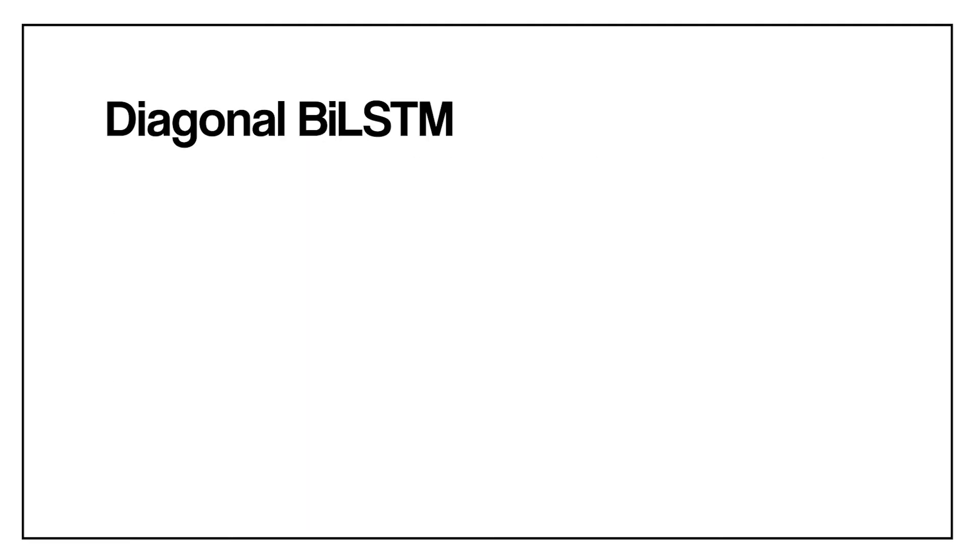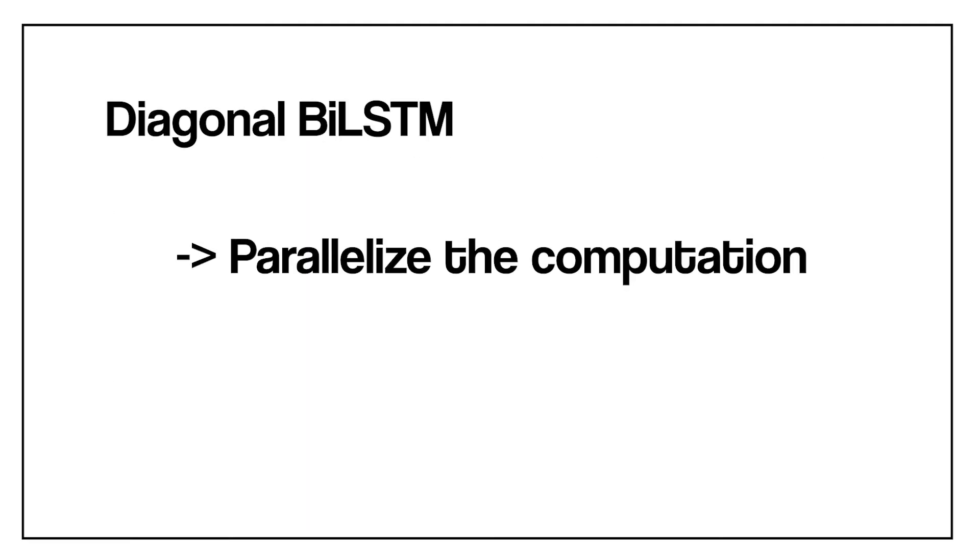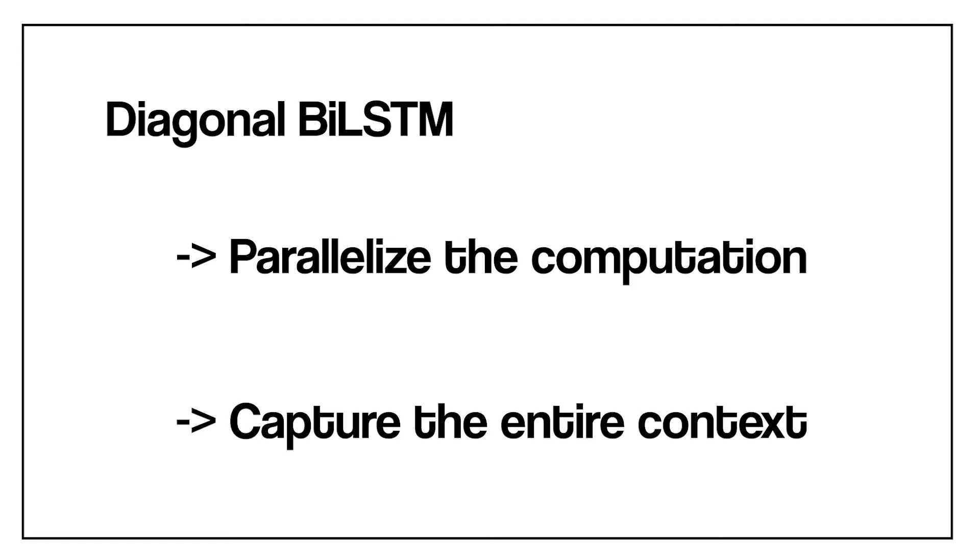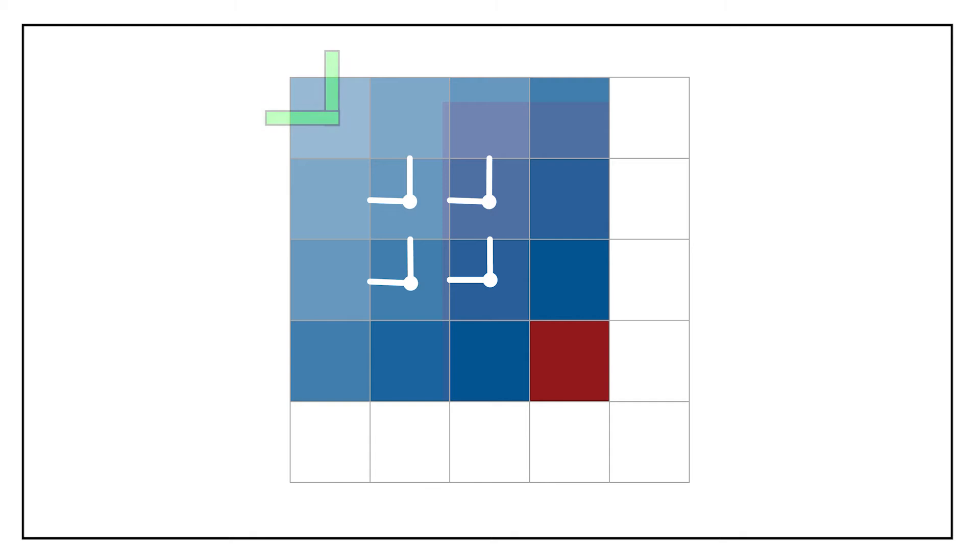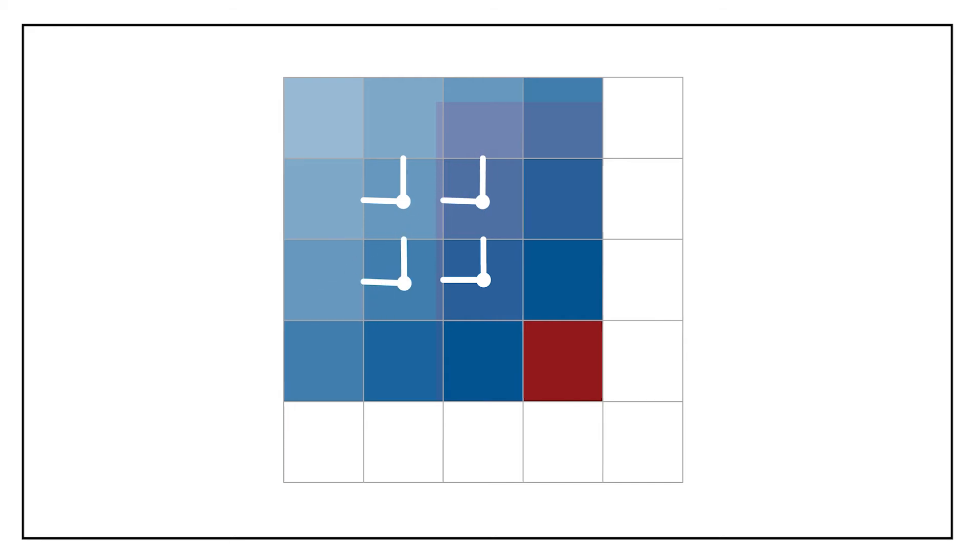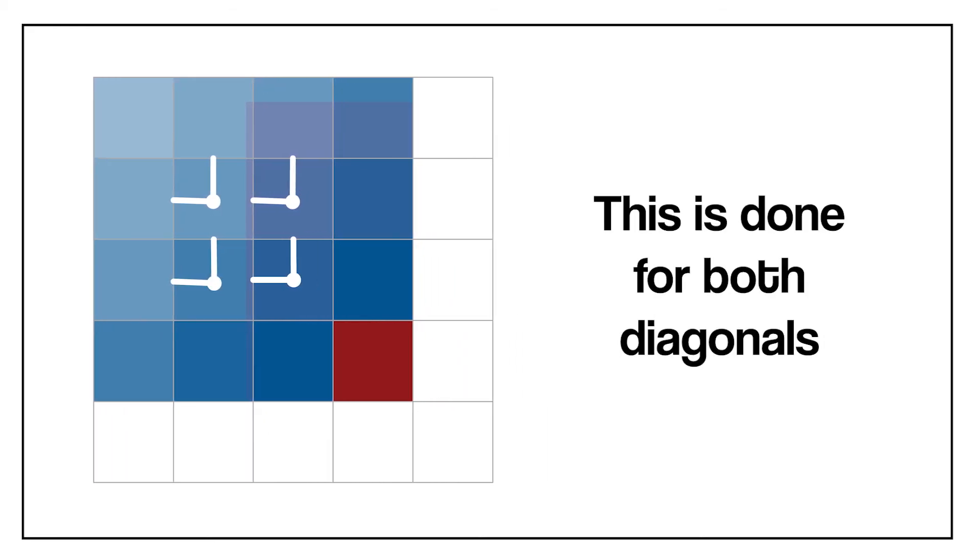Diagonal BiLSTM, however, has been designed to both parallelize the computation and to capture the entire available context. Each of the two directions of the layers scans the image in a diagonal fashion, starting from a corner at the top and reaching the opposite corner at the bottom. Each step in the computation computes at once the LSTM state along a diagonal in the image.